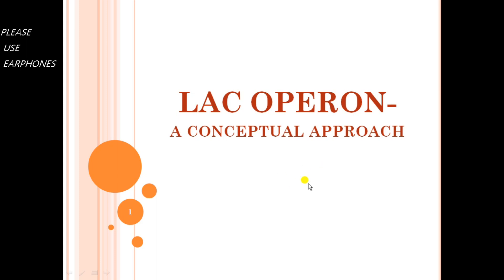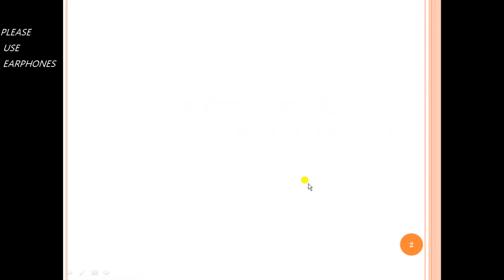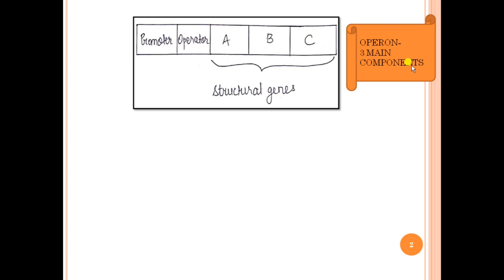To begin with, I will first explain what is an operon. An operon is a functional part of the DNA which consists of three main components: the promoter, the operator, and the structural genes. The structural genes in an operon are clustered together, present on the same DNA molecule adjacent to each other, and all of the structural genes are under the control of a single promoter.